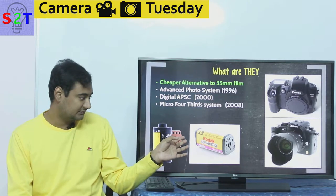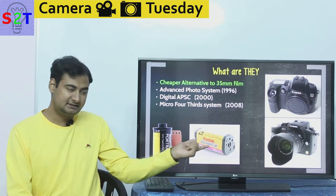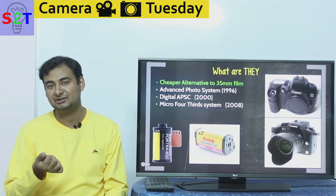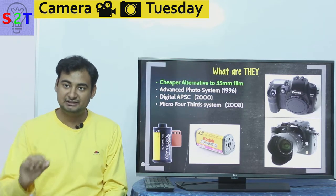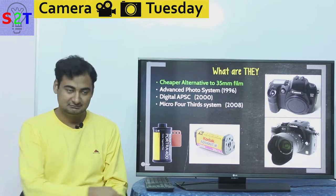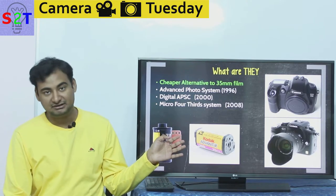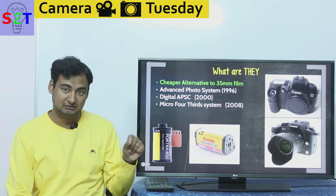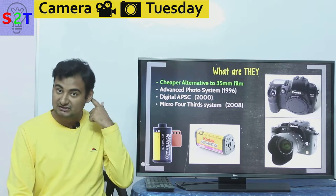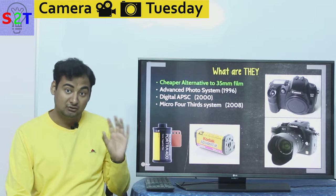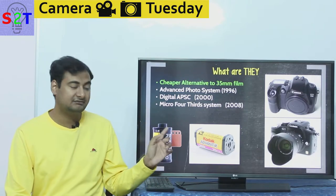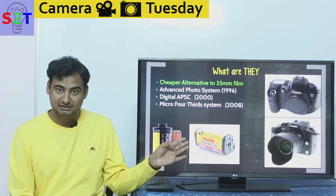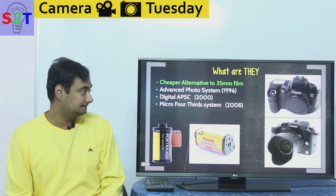The APS-C film had a magnetic tape structure built in where you could encode metadata onto the film itself. This came around 1996 and was kind of advanced, but it did not take off. However, it did survive long enough that an interchangeable lens camera using the APS-C system came into the market.